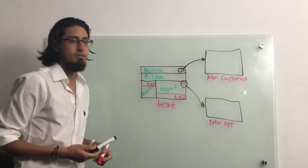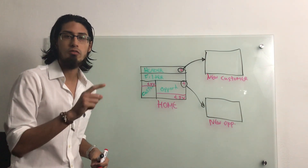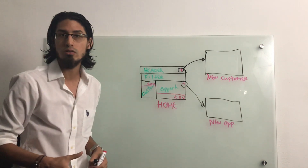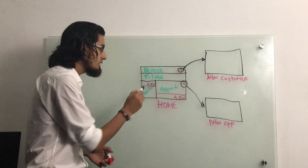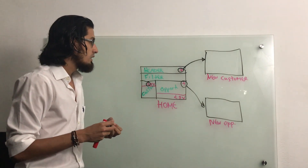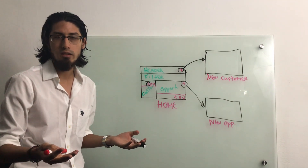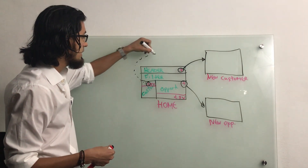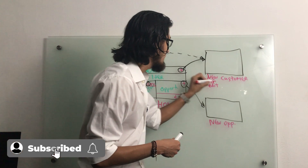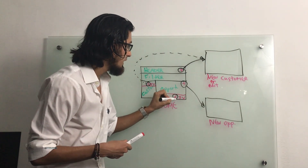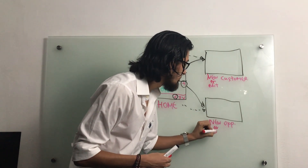The delete action is not going to open a new screen — it's basically going to open a pop-up where I confirm if I want to delete a customer. The same happens in the opportunities section. For the edit action, we will not open a new screen; we will actually open the same new customer screen but with some adjustments. So let's call this screen 'new or edit customer.' The same is going to happen with the edit button for opportunities — it will open the 'new or edit opportunity' screen.